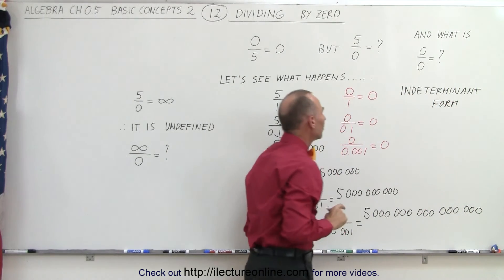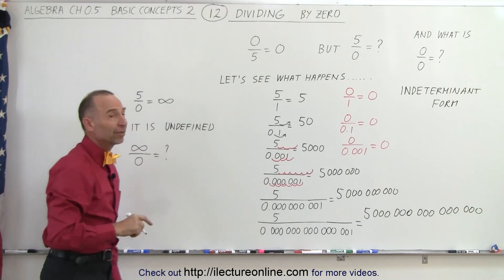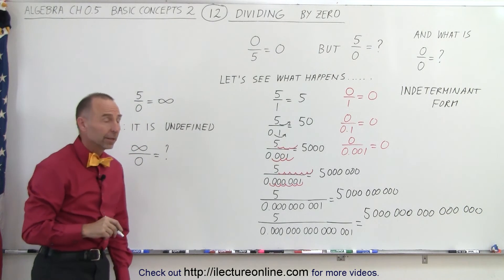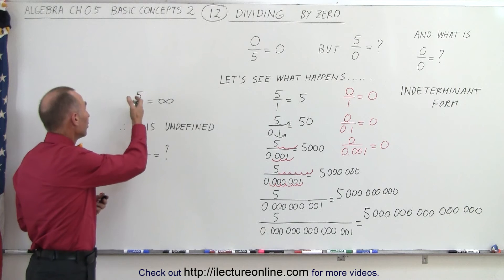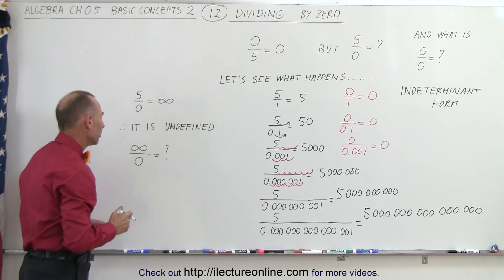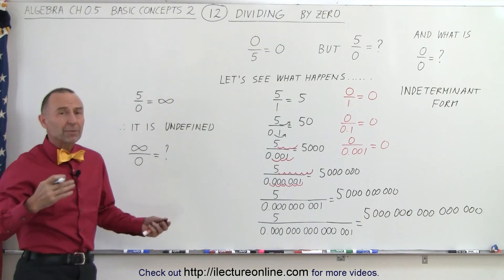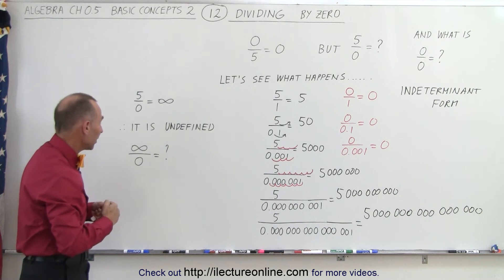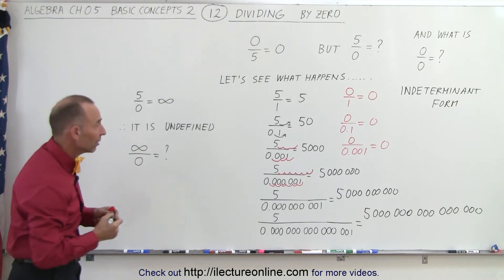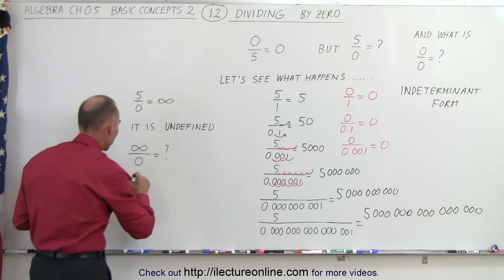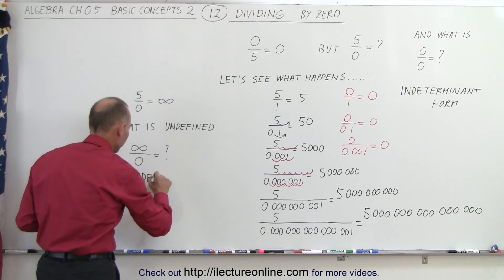Likewise, what if we take the number infinity and divide it by zero? A really big number divided by zero, no matter what the number is, is always infinity. But if we take the number that's infinitely big — which is undefined — and try to divide it by zero, again we can't determine what that is, and so they call that also an indeterminate form.